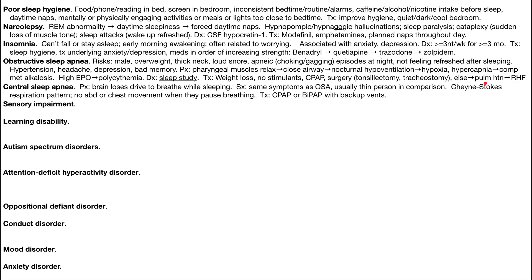Next is central sleep apnea. The pathophysiology here is that the brain loses the drive to breathe while sleeping. Symptoms are similar to obstructive sleep apnea, but the person is usually thinner since they don't have the obstructive problem. This is where you see Cheyne-Stokes respiration, where they pause breathing in the middle of the night — a mom or partner might notice the chest and abdomen stop moving. The fix here is CPAP or BiPAP with backup ventilation. In general, these sleep disorders affect a child's performance because poor sleep makes a kid inattentive, irritable, or unable to function at their fullest.